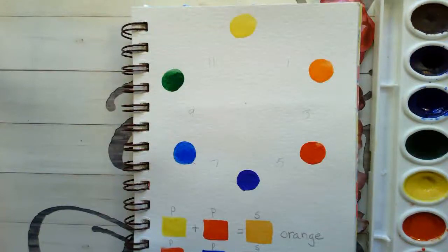Okay guys, so we're finally ready to finish up our color wheel. All we need to do is add some labels and our tertiary colors. So let's start with our labels.